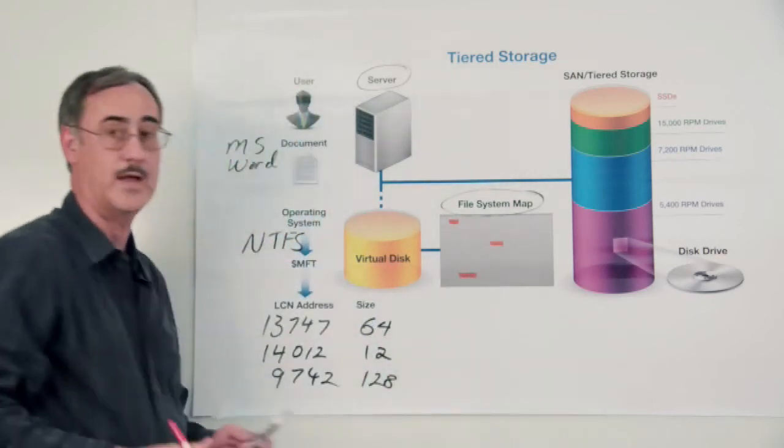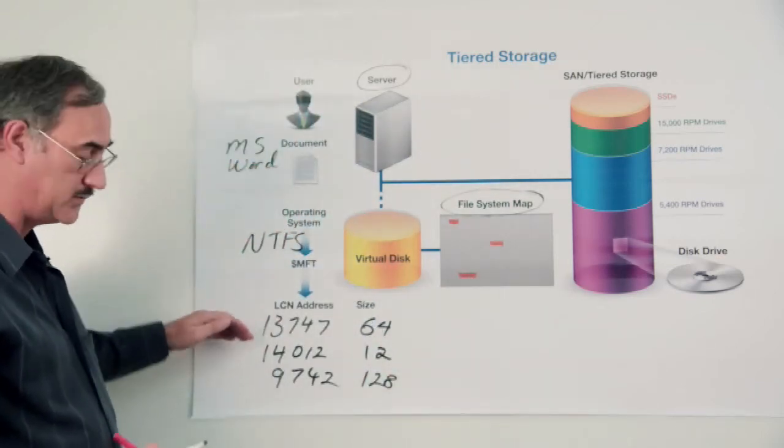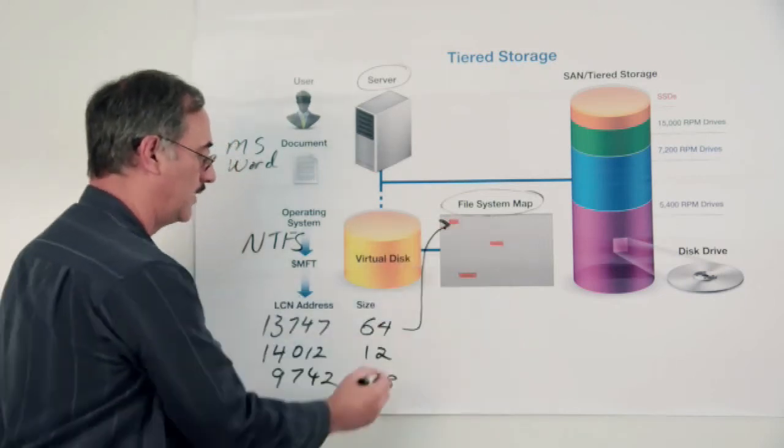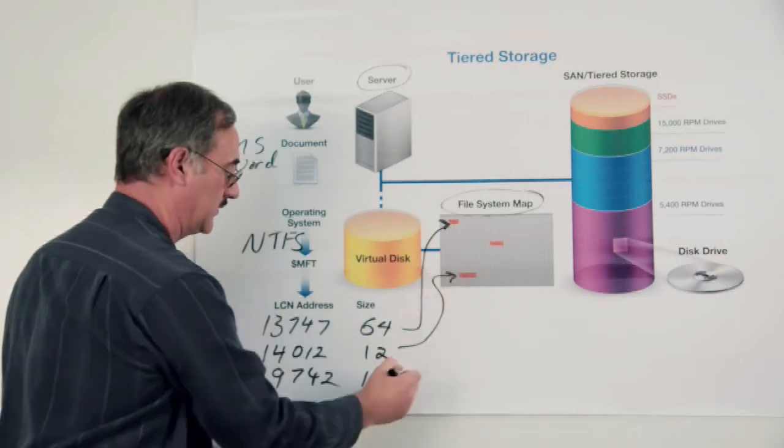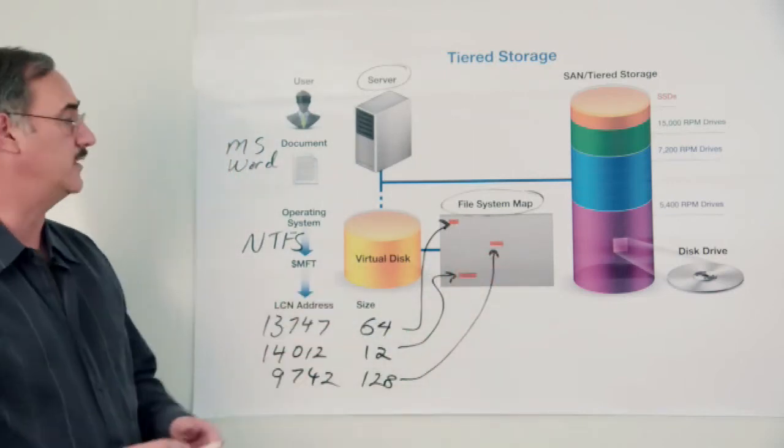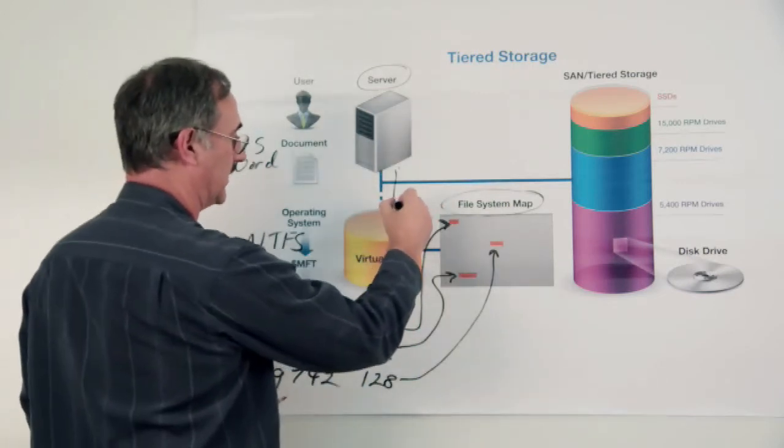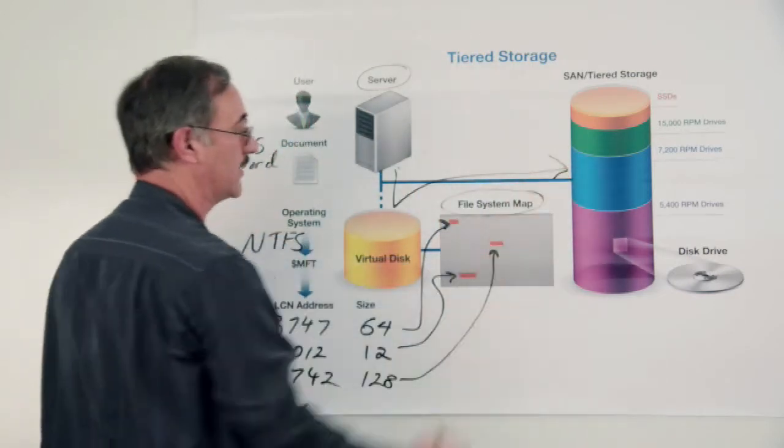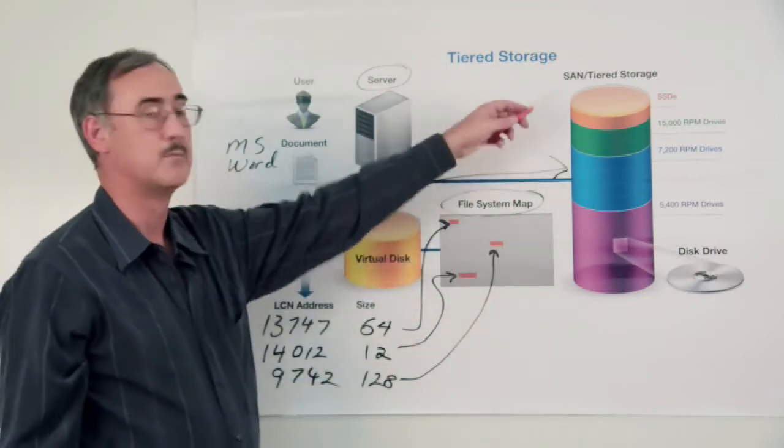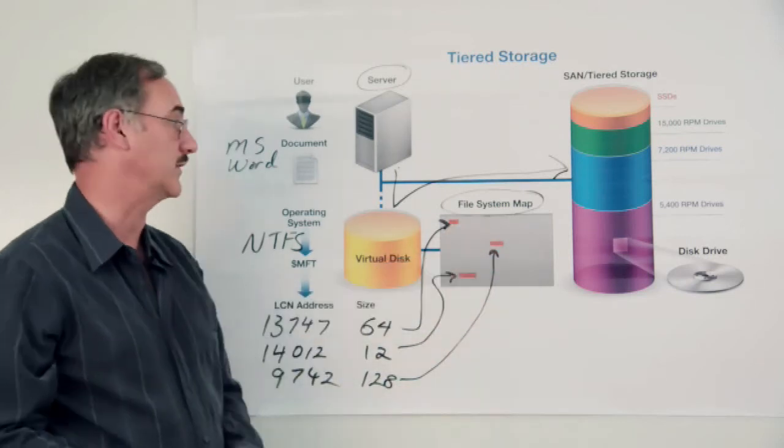So each of these I.O. requests, or when accessing this file, each of these pieces then have to map to a particular location within Windows to find that data, to issue a separate individual I.O. request from the computer, from this virtual disk, out to the SAN storage, and then let the SAN storage try to pick out which type of media best handles the frequency of those I.O. requests.